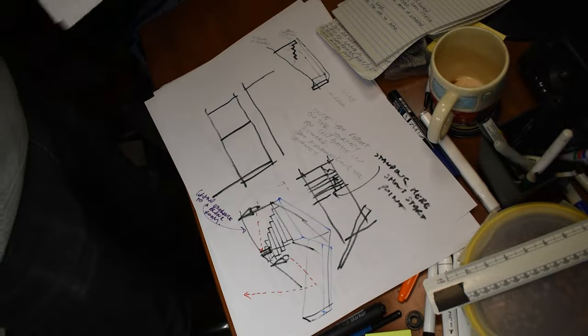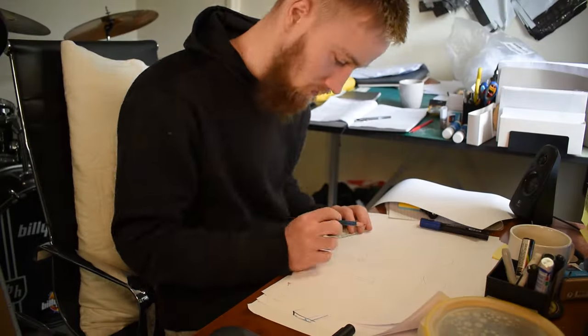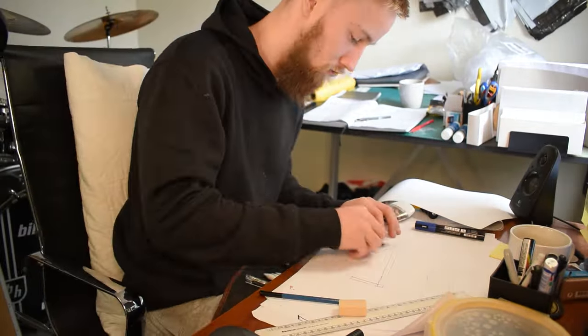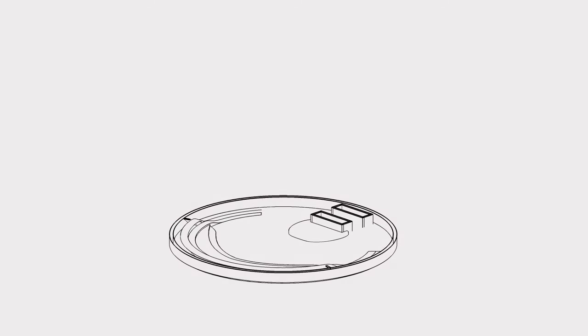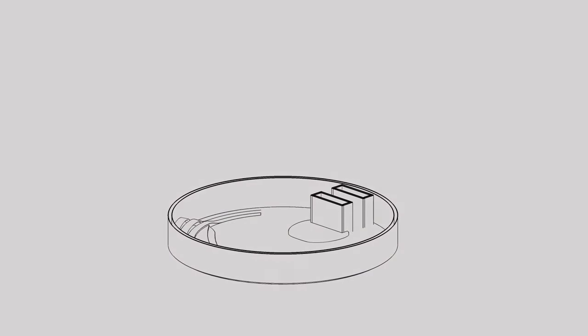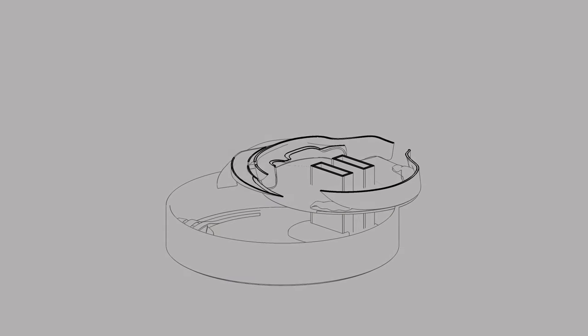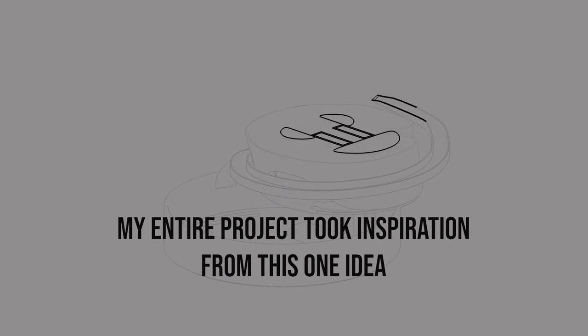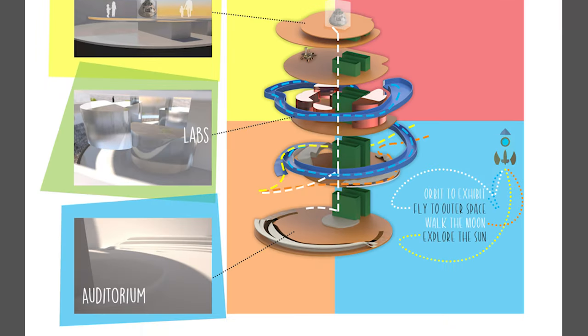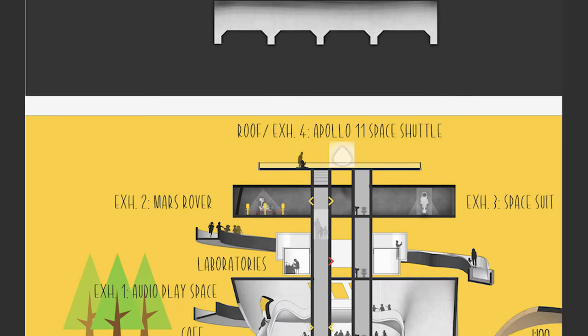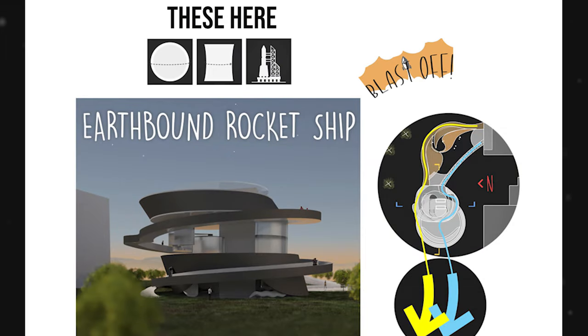I'll often use concept diagrams to generate new ideas for the initial parts of my project, then use those ideas to run through the entire project, constantly coming back to them. These are the most important types of diagrams to do. For example, for my fourth studio I had the concept of 'journey through orbit,' and I had three simple diagrams to showcase these main ideas, which I ran with for the next twelve weeks while completing the project.